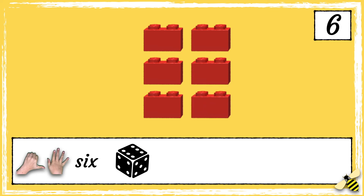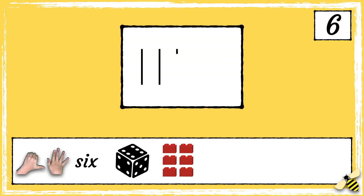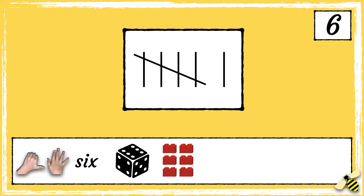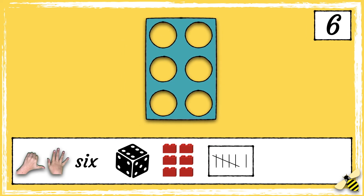Can you have a go at finding 6 things? For example, you could find 6 pencils. Here are 6 notches on a tally chart. 1, 2, 3, 4, 5, 6.